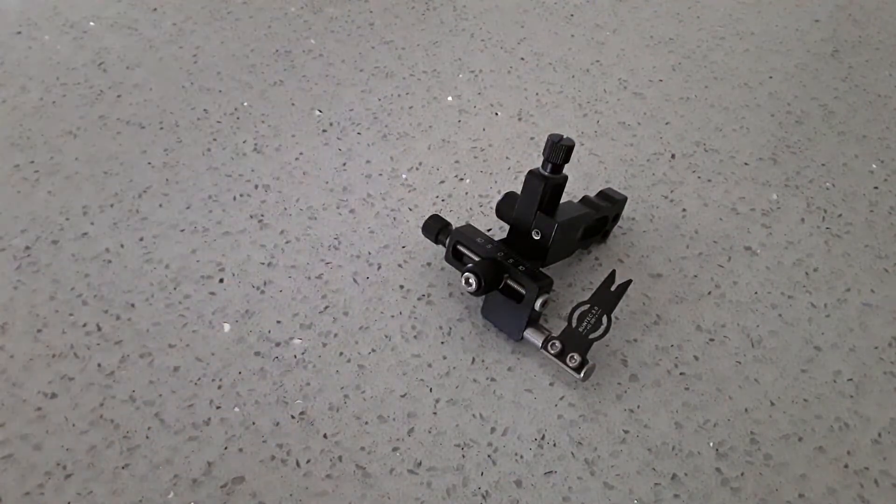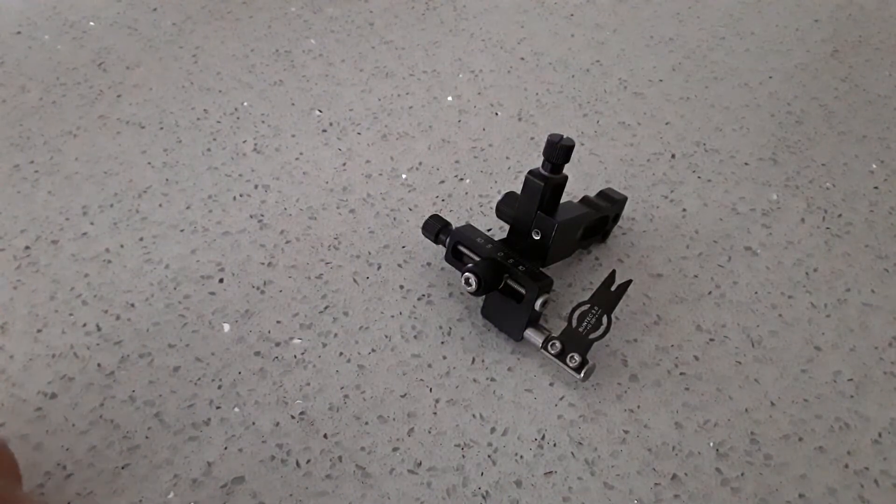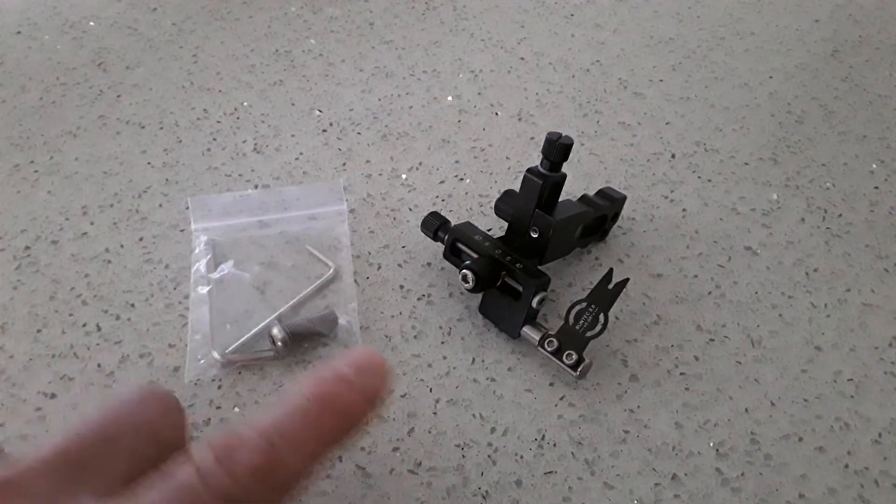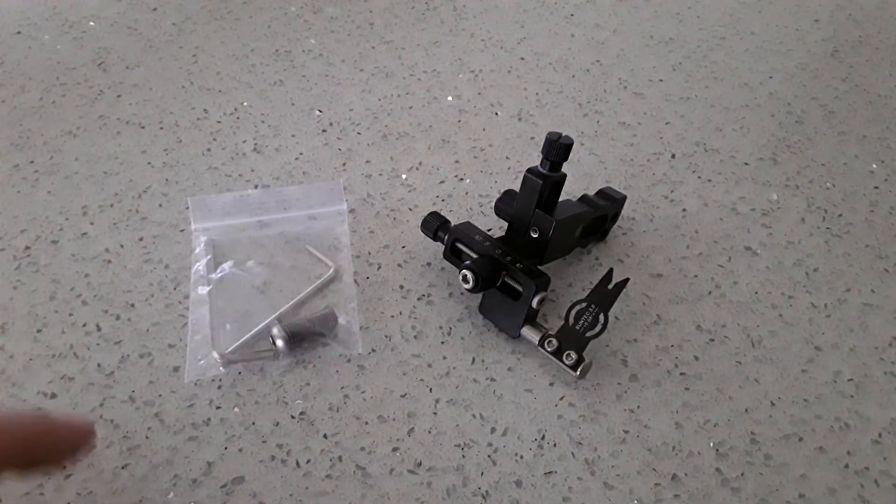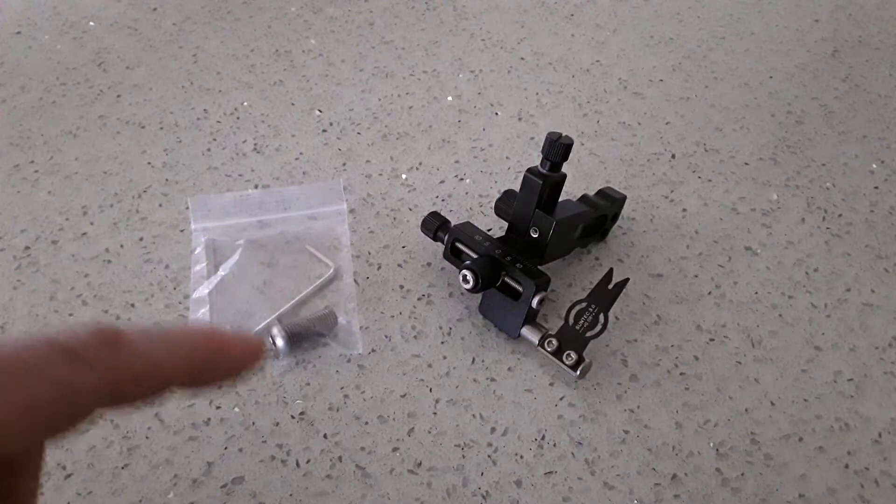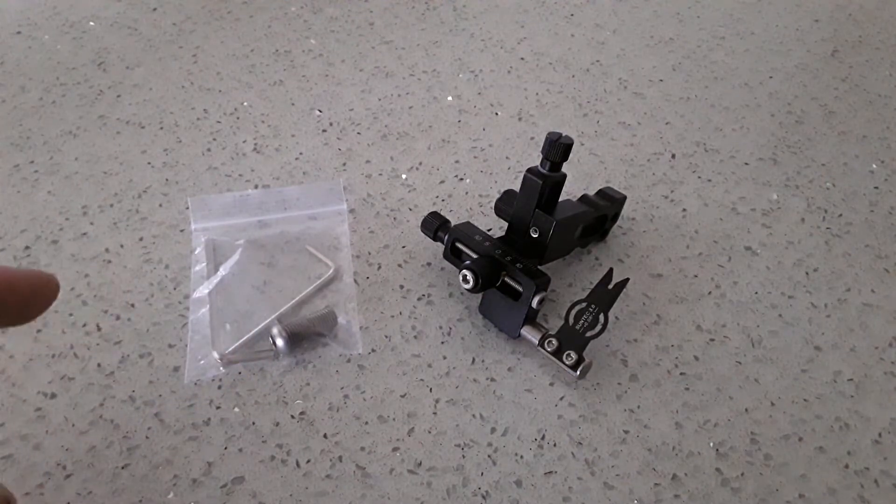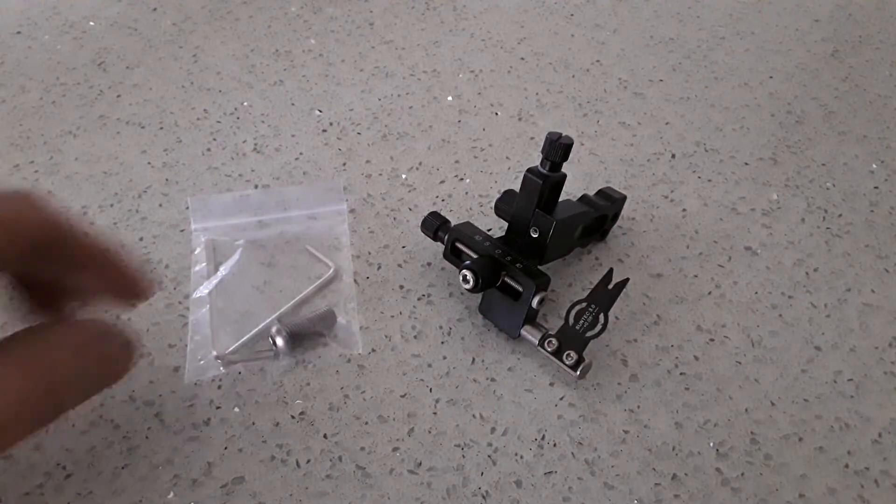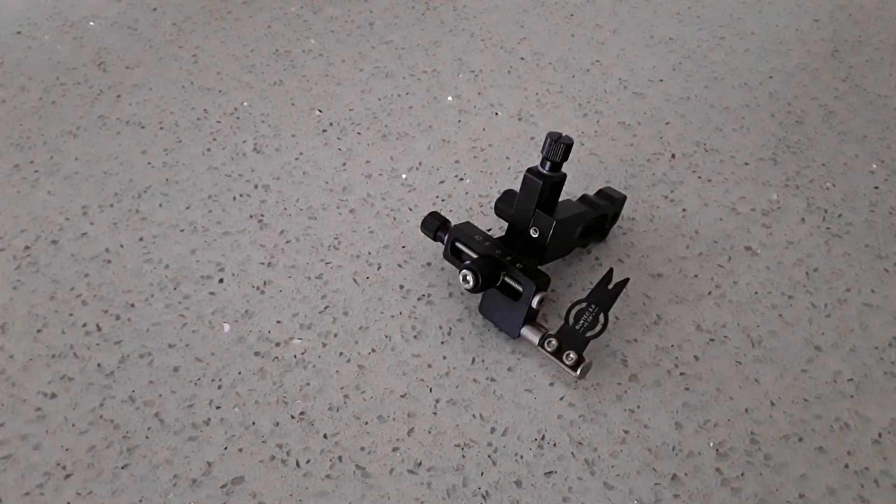So what do you get inside the box? First thing you get is a bolt to connect the launcher to your compound bow, and one of those allen keys is for that bolt and the other allen key is for the other adjustments that you can make with the launcher.